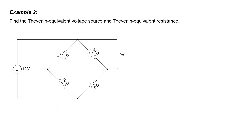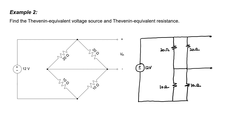In example 2, we're tasked with finding the Thevenin equivalent voltage and the Thevenin equivalent resistance. Although the circuit is drawn in a funny way, the two 20 ohm resistors are just in parallel with one another, and the two 10 ohm resistors are also just in parallel. Let me redraw the circuit to make that clear. Combining the two 20 ohm resistors gives 10 ohms, and combining the two 10 ohm resistors gives 5 ohms.